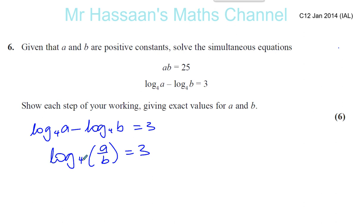And I can rewrite this now in its normal form for logs. Remember, log to the base A of B equals C can be written as A to the power of C equals B. This is the base, this is the power, this is the result. So 4 is the base, 3 is the power, and the result is A over B. So you have 4 cubed, which is 64, equals A over B.